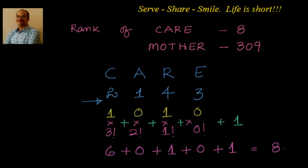So, starting from C (rank 2): to the right of 2, how many are less than 2? Only 1. Less than 1? Zero. Less than 4? One, which is 3. And the last is 0. We multiply these counts starting from the right with factorials 0, 1, 2, 3 — or starting with 3 factorial down to 0 factorial. You multiply them, add them up, and at the end add 1. That gives you the rank.